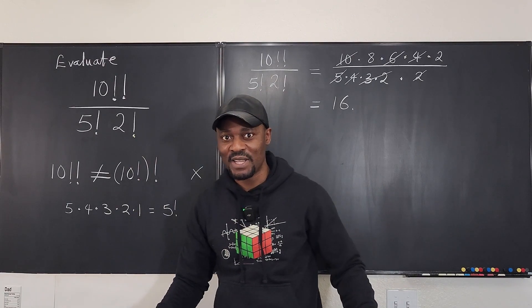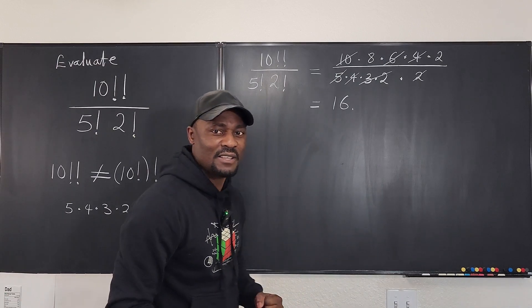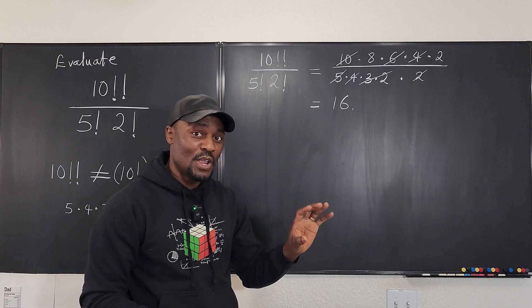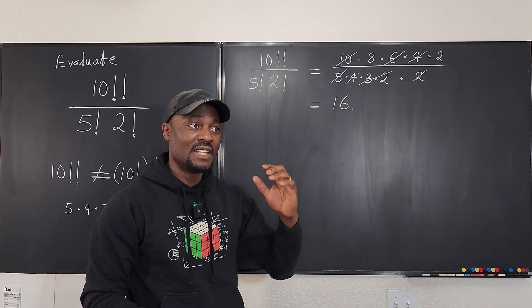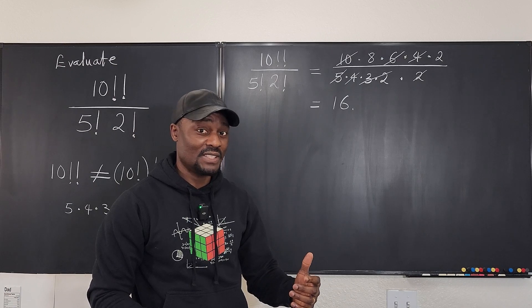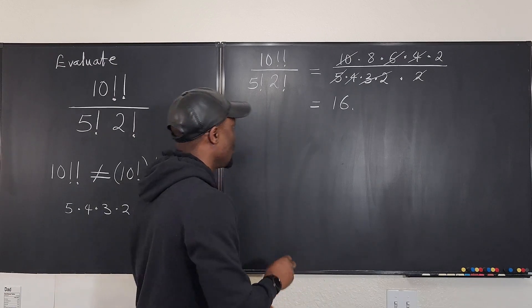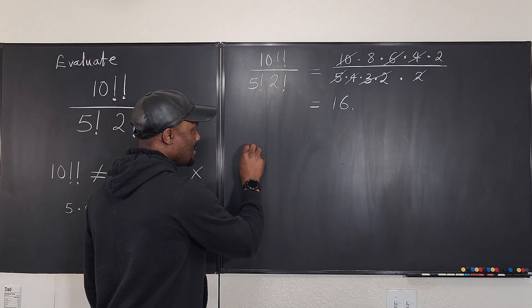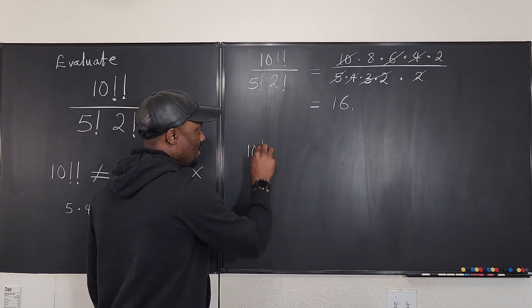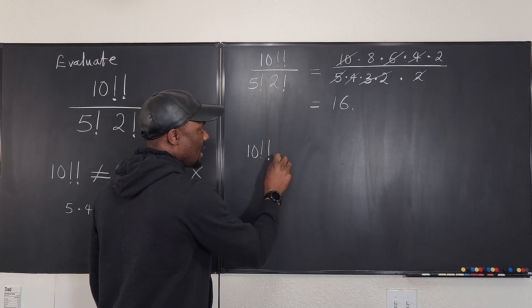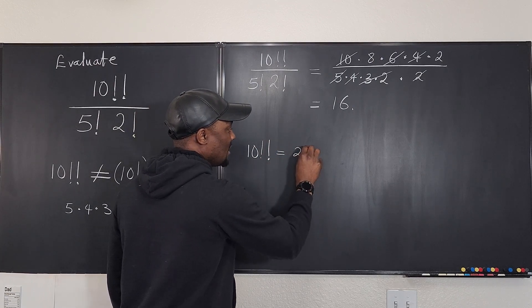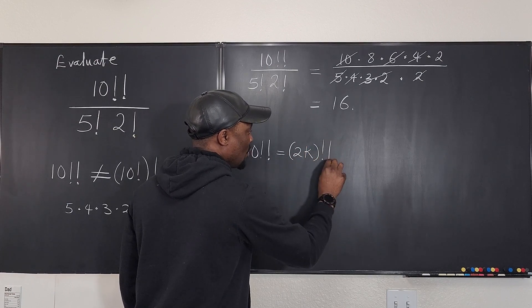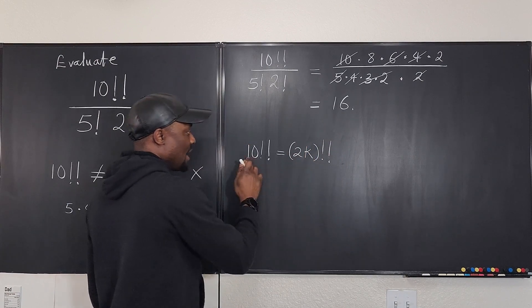In case somebody gives you this and says decode it, let me show you something fascinating. Whenever the number whose double factorial you're taking is even, there's a better way to write it. Just imagine if I wrote 10 double factorial this way. I'm going to write 10 double factorial as 2 times k, double factorial. I want to show you that for any even number, this applies.